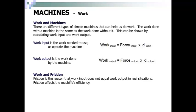Friction is the reason that work input does not equal work output in real situations. Friction affects the machine's efficiency. Efficiency can be calculated using work input and work output: Efficiency = Work output / Work input.